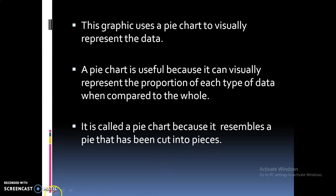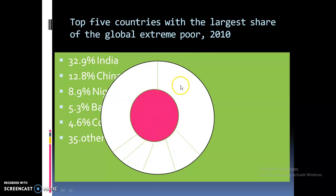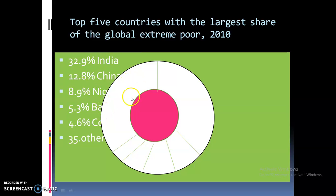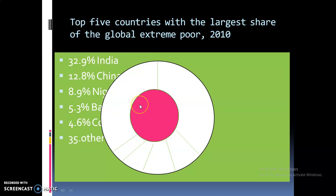It is called a pie chart because it resembles a pie that has been cut into pieces. The graphic uses a particular type of pie chart called a donut chart, where the central portion of the graphic has been left blank. On the slices of the chart, the numerical percentages are represented. For example, one slice represents India, which is 32.9 percentage.